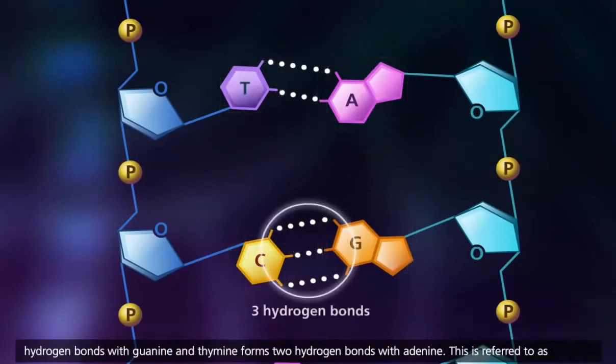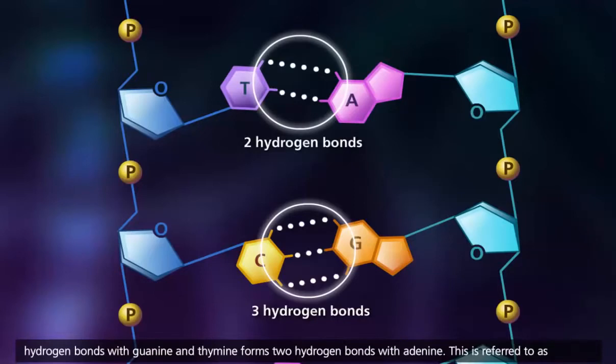Cytosine forms three hydrogen bonds with guanine, and thymine forms two hydrogen bonds with adenine. This is referred to as complementary base pairing.